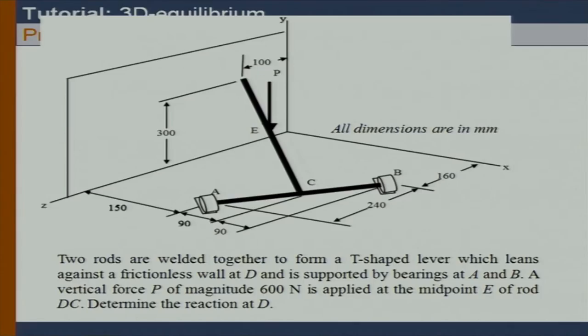Now, when you take the moment about the A-B axis, we have a force from the wall that is along the X axis. So when you take the moment about the A-B axis of that force, which component actually contributes to the moment about A-B? We need to take the component of DX which is perpendicular to A-B — that's all.